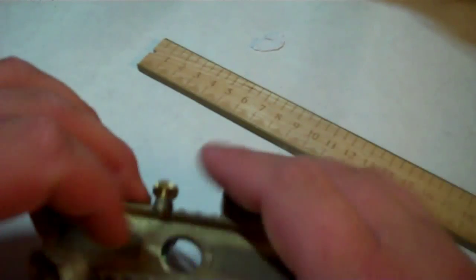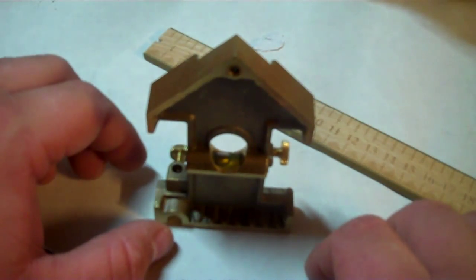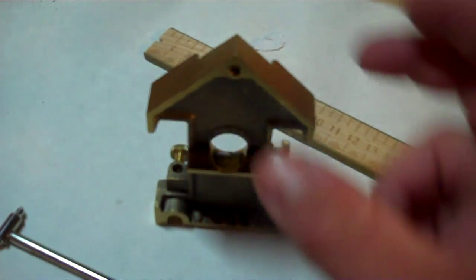First off, you got a ruler. It's got centimeters, it's got inches. You got a level so you can measure if something's level, which looks like my desk isn't level.